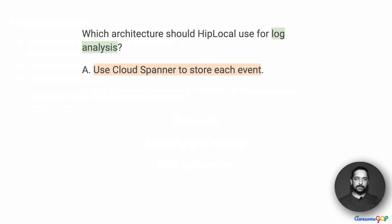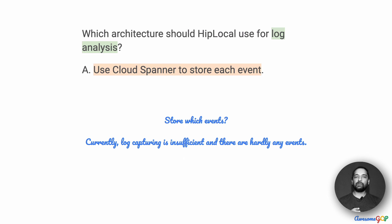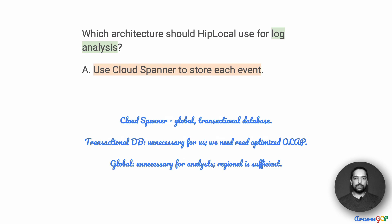Option A suggests that we use Cloud Spanner to store each event. But which events? Currently there is insufficient logs being captured and there are hardly any events at all. So what events are we actually talking about storing? Therefore, it's already looking like an incomplete solution.